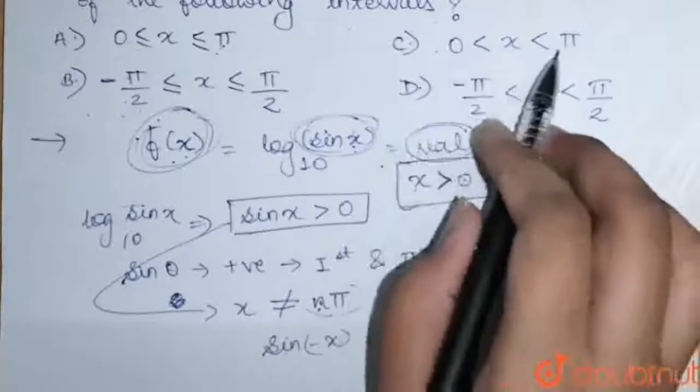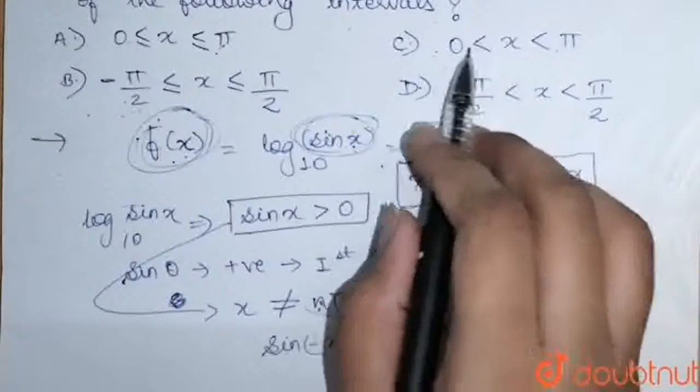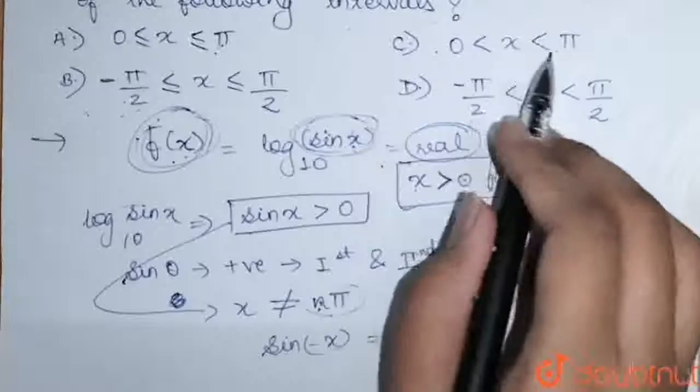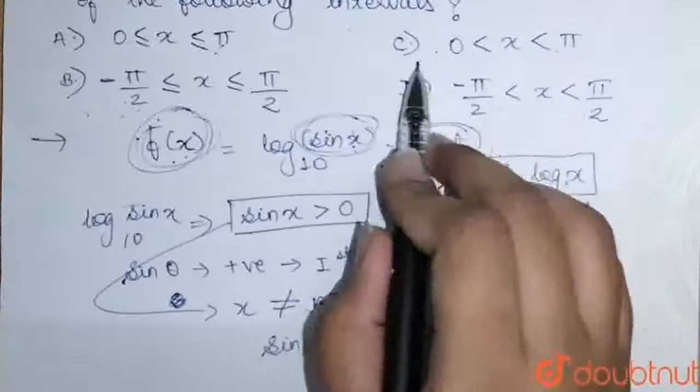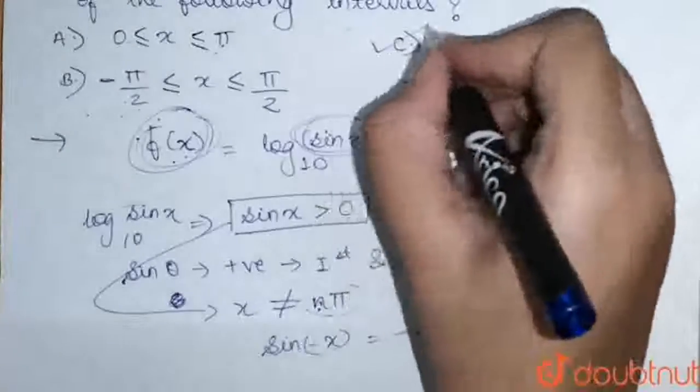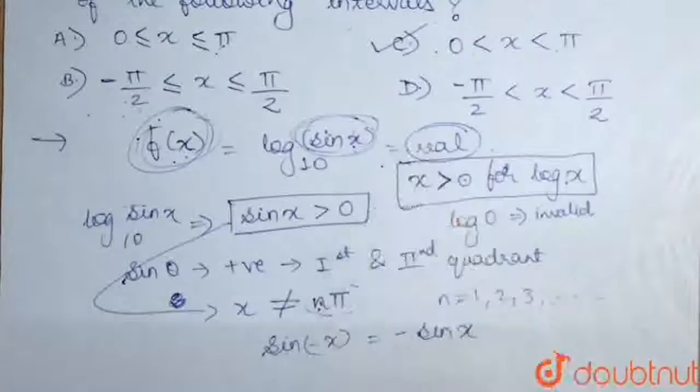In C option, x lies between 0 to π. And when x is greater than 0 and less than π and not equal to them, C option is valid. So here, correct option is C.